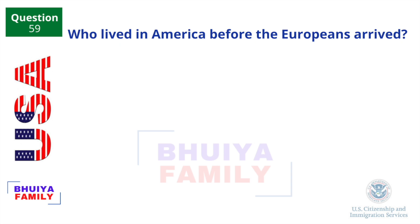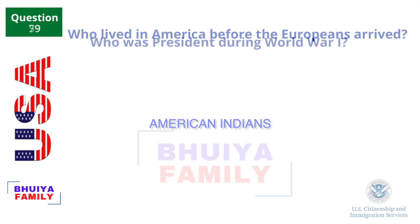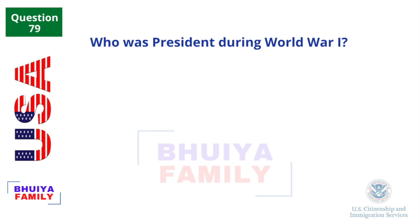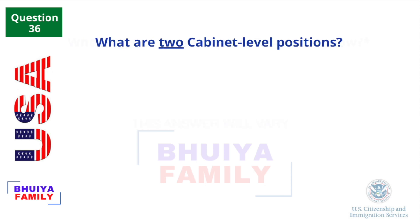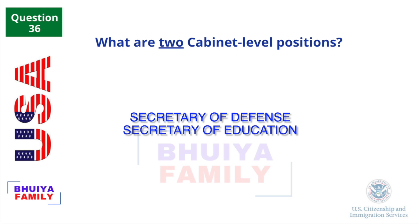Who lived in America before the Europeans arrived? American Indians. Who was president during World War One? Woodrow Wilson. Who is one of your state's U.S. Senators now? This answer will vary. What are two cabinet level positions? Secretary of Defense. Secretary of Education.